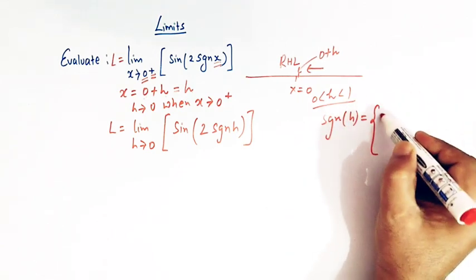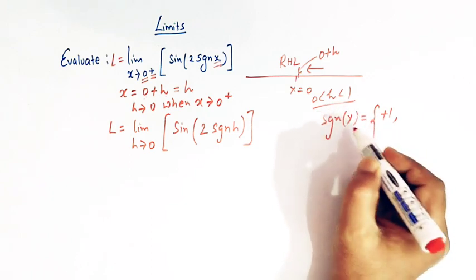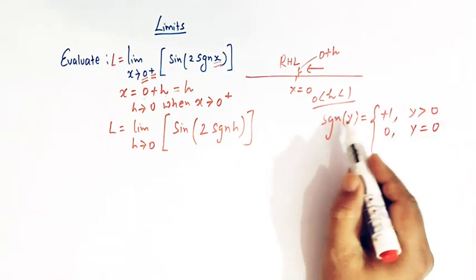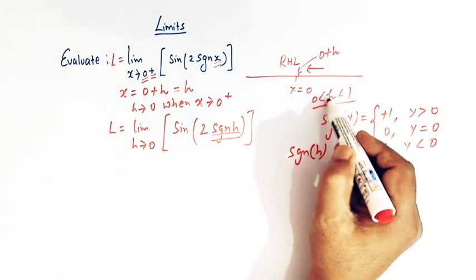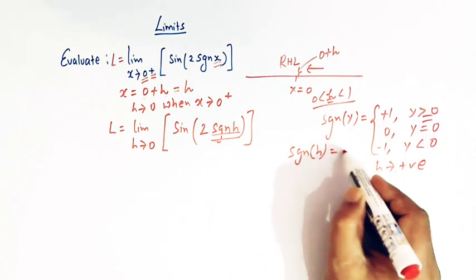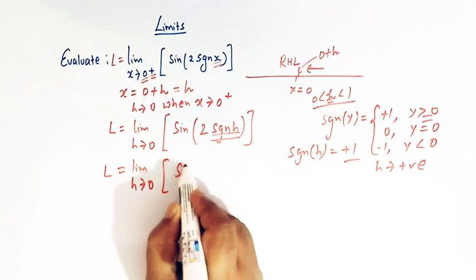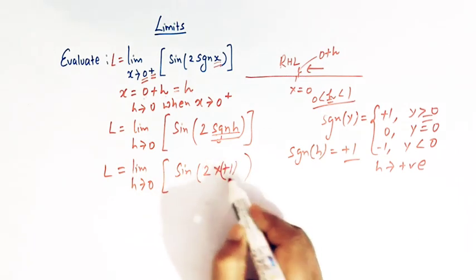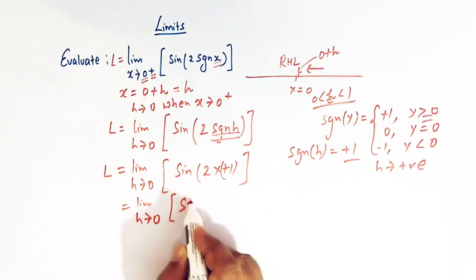We know that signum of y is positive 1 whenever y is greater than 0, signum of y is 0 whenever y is 0, and signum of y is negative 1 whenever y is less than 0. Here we have signum of h, and this quantity h is a positive quantity. So whenever h is positive, signum of h is plus 1. So now we have L = limit h tends to 0 of greatest integer of sine of 2 times 1.